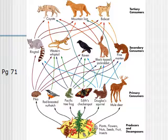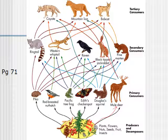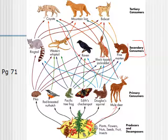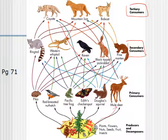Here's a land food web, and again the arrows show the way in which the energy flows. As you can see, especially going from the primary to the secondary consumer, it gets really complex really quickly. These primary consumers, the herbivores, are eaten by lots and lots of other things — the secondary consumers, which can be omnivores and carnivores. By the time you get to the tertiary consumers, you're dealing with only the carnivores, the ones that eat meat exclusively.